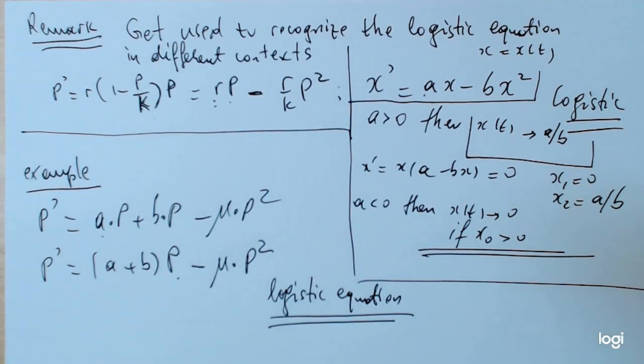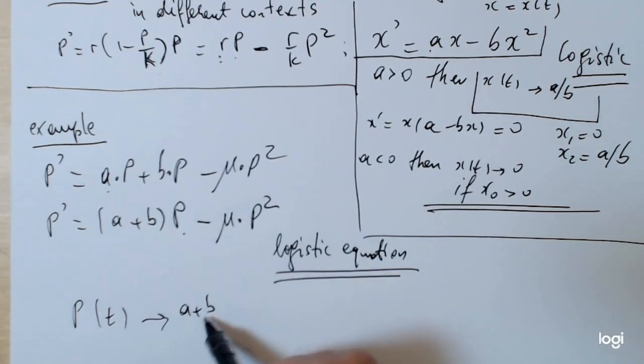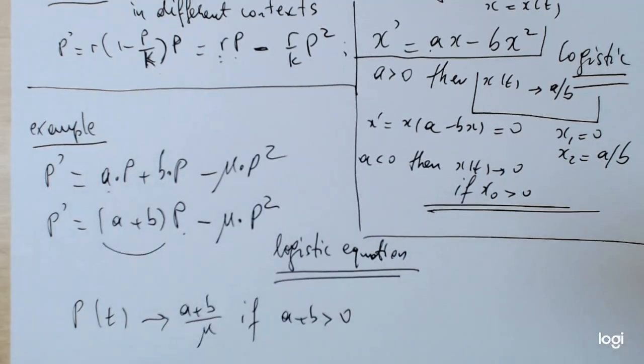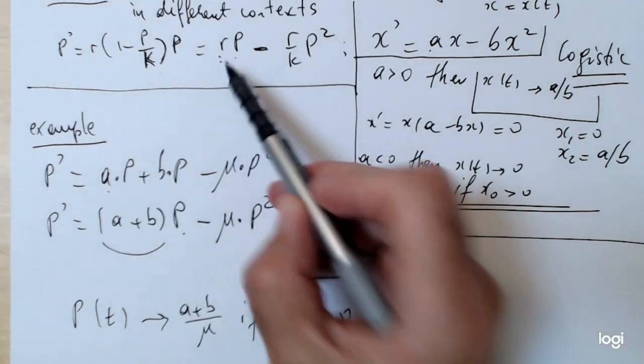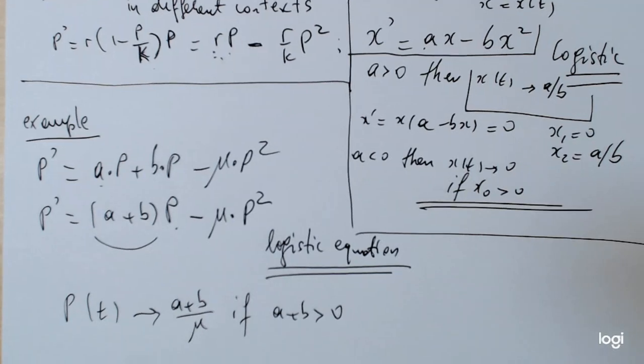So, the analysis still works as before, except now, you know, what would be the limiting behavior in this last example, where it would be p approaches a plus b over mu, if a plus b is greater than zero, because a plus b, this constant, plays the role of r, if you look at the standard format. And, in the last part of the lecture, you'll see the epidemic model, which reduces to the logistic equation. We'll talk about the interpretation shortly. So, with that in mind, let's stay tuned for the third part. Thank you very much.